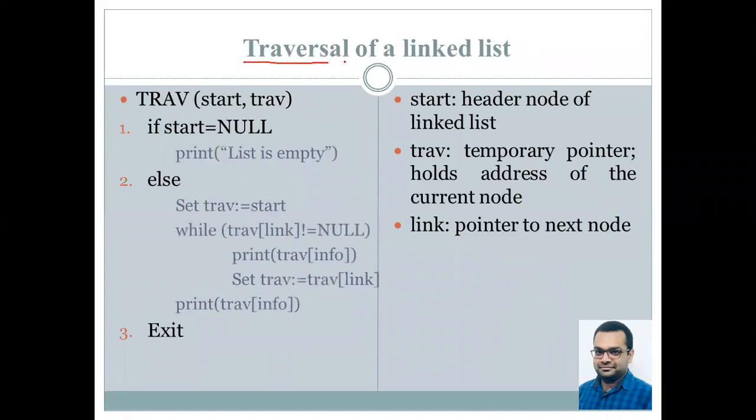Traversing means visiting each and every node in a linked list only once and printing out the value that is present in the node. Let's begin.